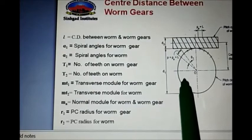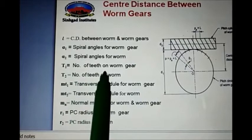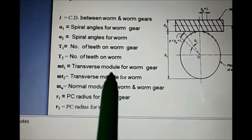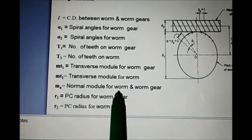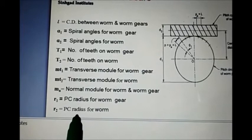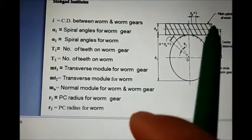t1 and t2 are the number of teeth on worm gear and worm respectively. mt1 and mt2 are the transverse modules for worm gear and worm. mn is the normal module for both worm and worm gear — the normal module is the same for both. r1 and r2 are the pitch circle radii for worm gear and worm.